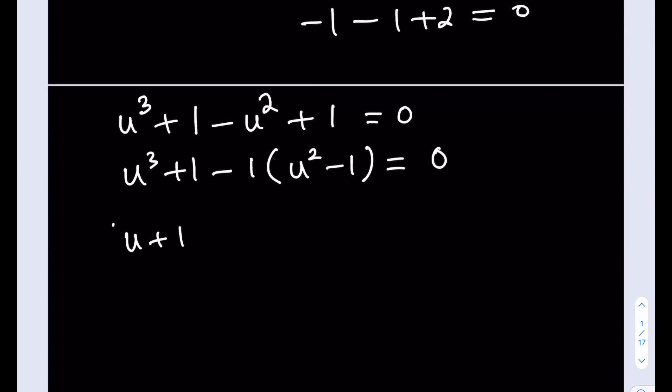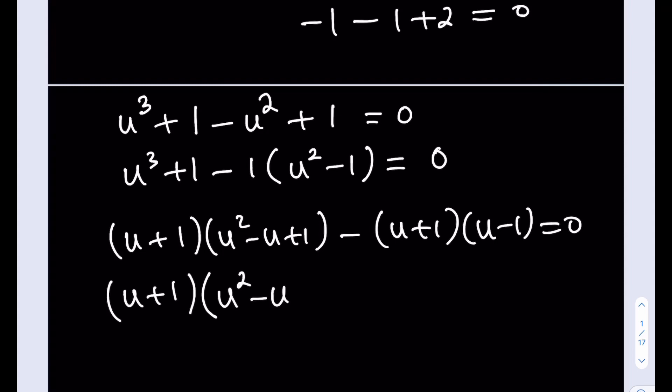u plus 1 multiplied by u squared minus u plus 1. And the other expression can be factored as u plus 1 multiplied by u minus 1. Great. So now we can take out the u plus 1, and then the other factor is going to be u squared minus u plus 1 minus u plus 1. Be careful here. We're not canceling out any of the terms.